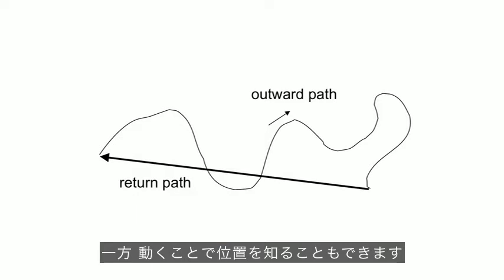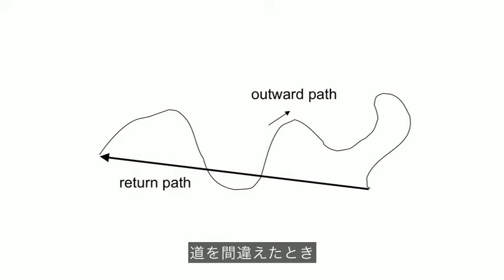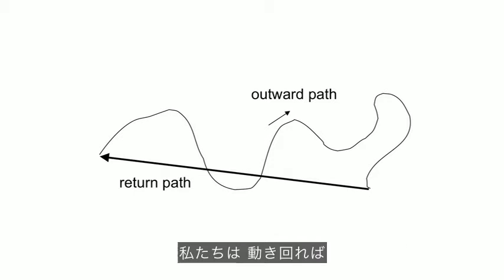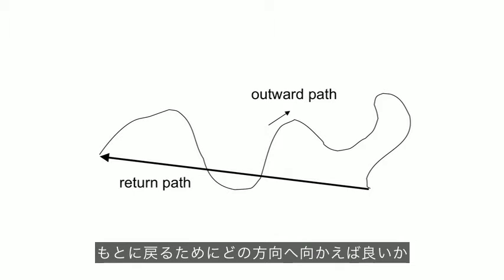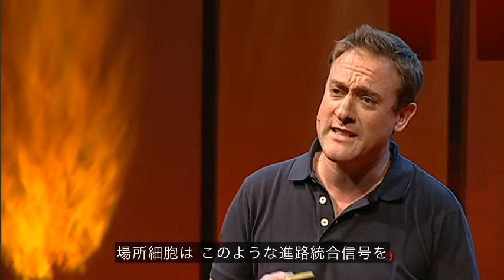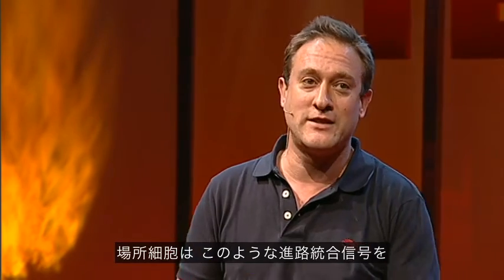But we also know where we are through movement. So if we take some outbound path, perhaps we park and we wander off, we know because of our own movements which we can integrate over this path roughly what the heading direction is to go back. And place cells also get this kind of path integration input from a kind of cell called a grid cell.